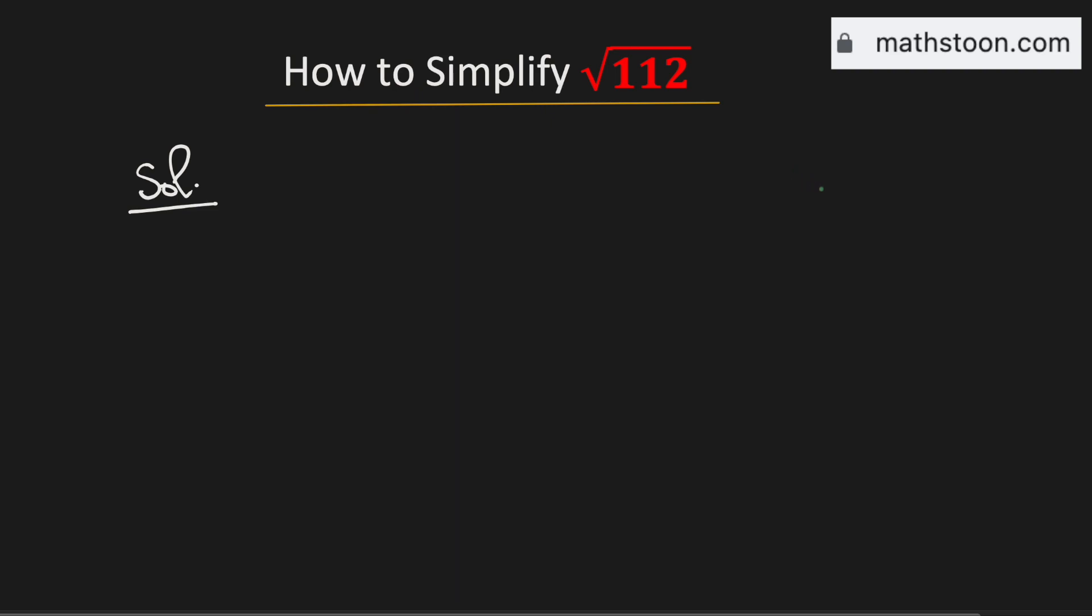We know that the perfect squares are 1, 4, 9, 16, 25 and so on. Now we check that 4 divides 112, 9 cannot, 16 divides 112, 25 cannot.